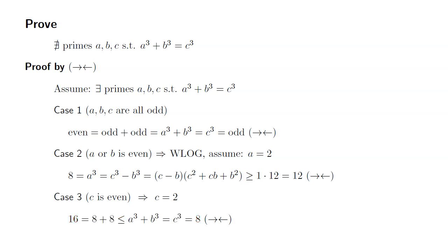Since we eliminated all three possibilities, we know that our assumption was false. Therefore, we may conclude that there are no prime numbers a, b, and c such that a³ + b³ = c³. That's it. I hope this was clear.